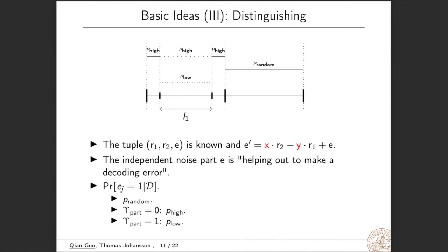So let's denote the contribution of x times r2 to be epsilon part. But for this case 2 interval, we know that the repetition decoding will be erroneous with very low probability. So the value of e doesn't affect the decoding output very much. But for the case 1 interval, the corresponding repetition decoding will be erroneous with a higher probability. If epsilon part is 0, then the probability that ej is 1 is relatively higher. Otherwise, the probability of ej to be 1 is low.